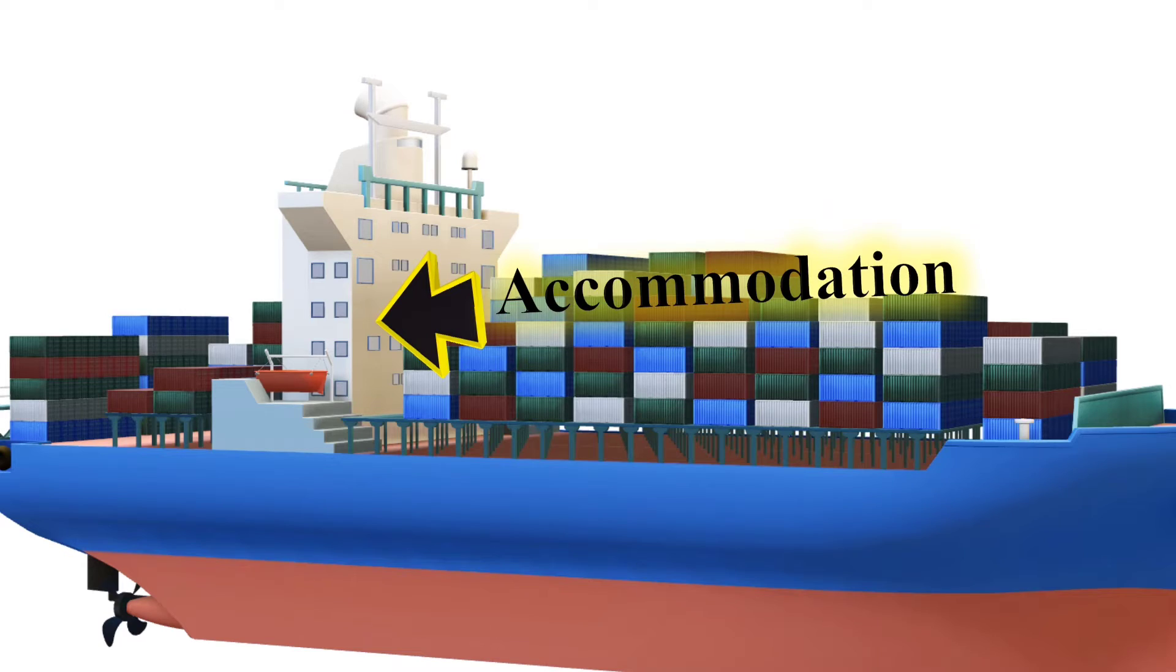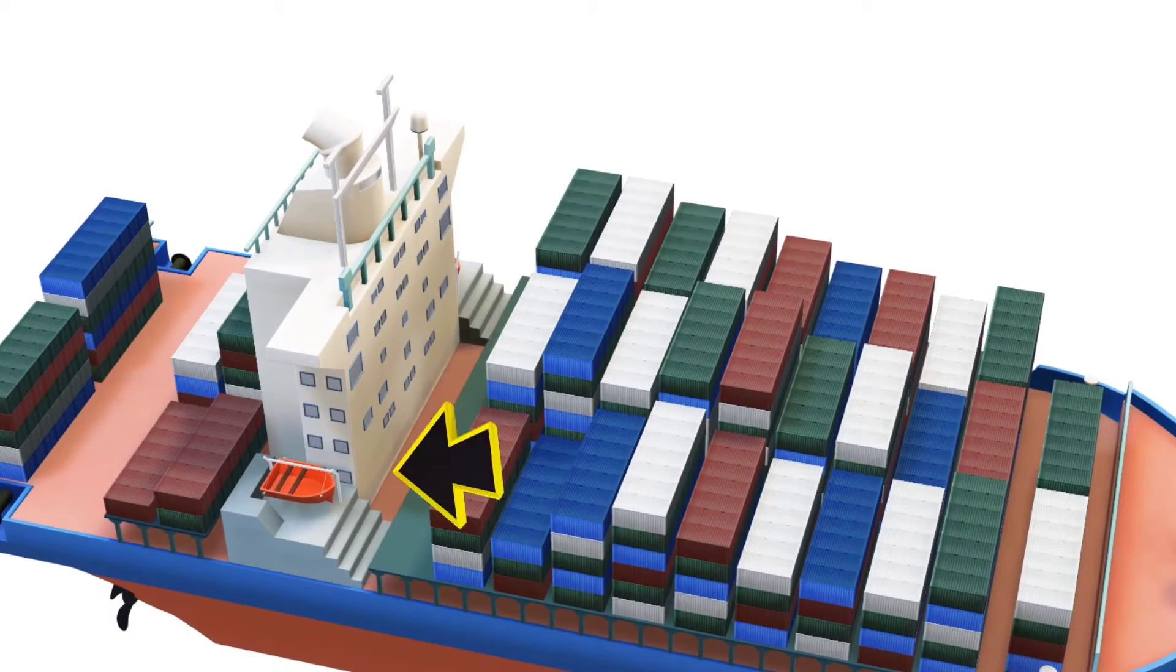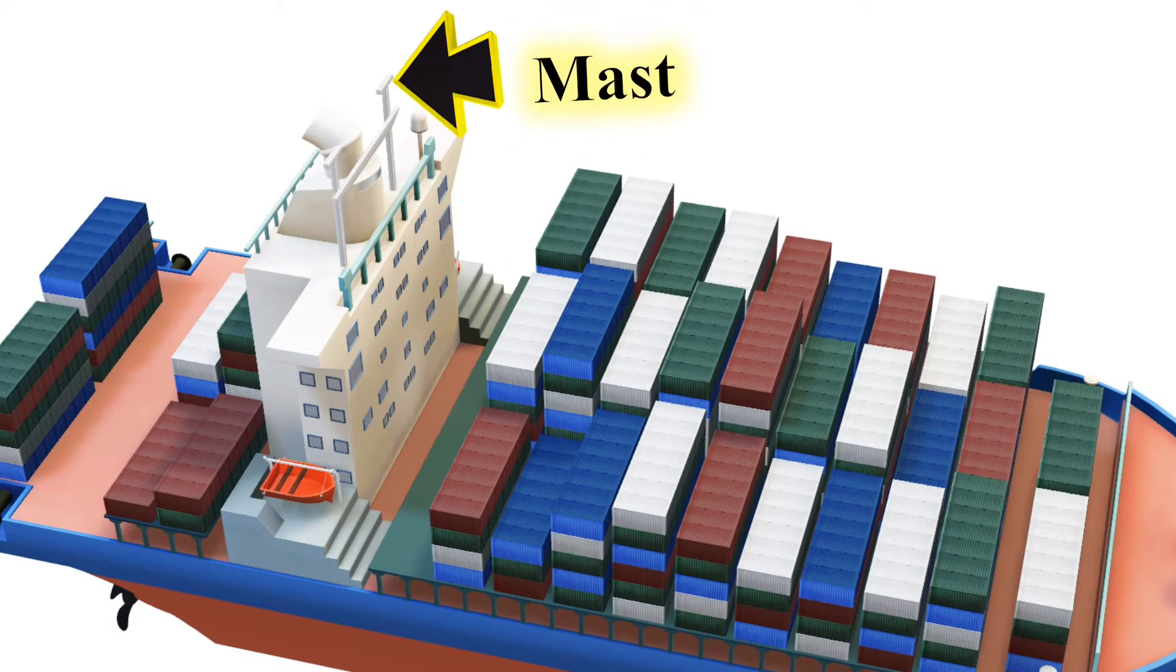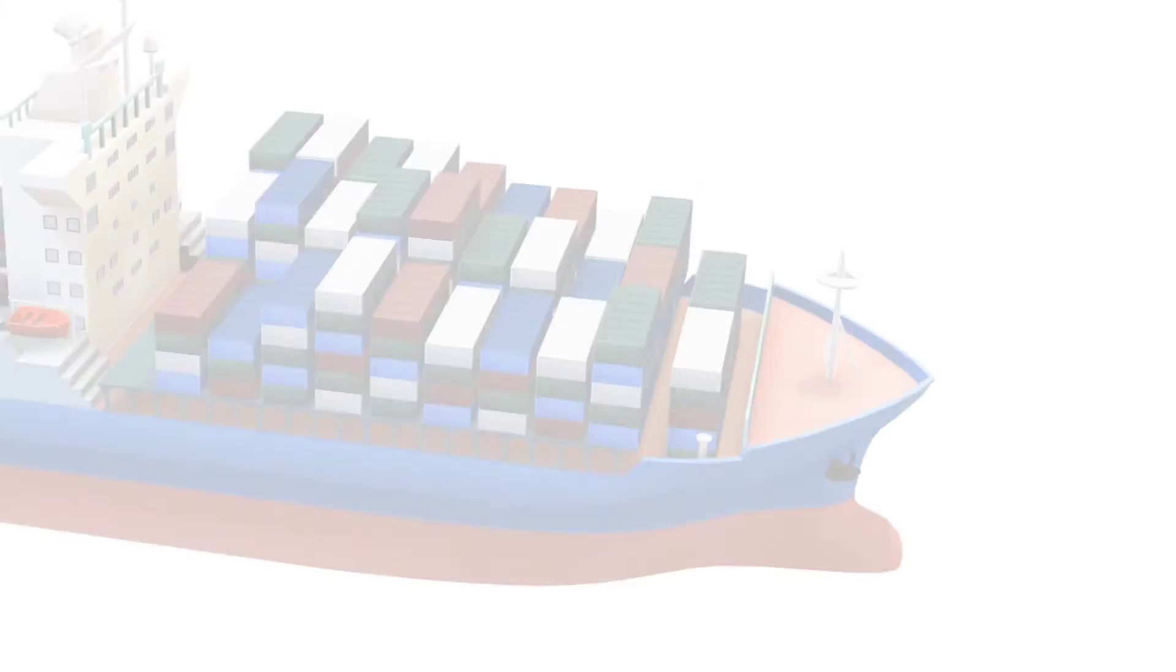Accommodation, living quarters and facilities for the ship's crew. Mast, a tall vertical structure on a ship that supports sails and navigation equipment.